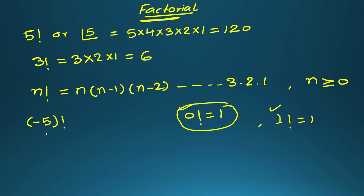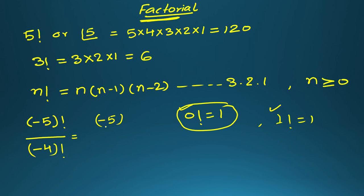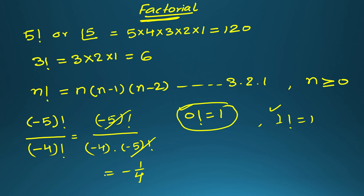For example, if you have factorial of −5 written alone, you cannot calculate it. But if it is written as a ratio — say factorial(−5) over factorial(−4) — then you can simplify. Since −5 is smaller, keep it as is. Factorial(−4) can be written as (−4) × factorial(−5), so factorial(−5) cancels out and you get −1/4.